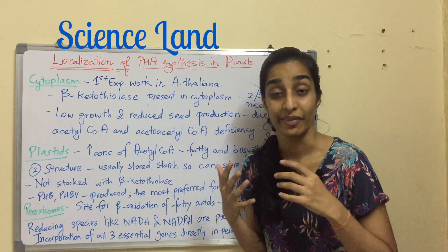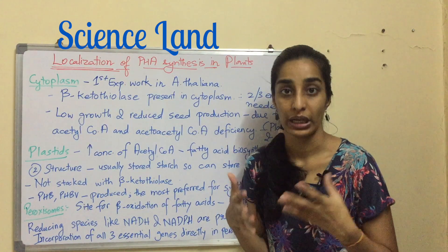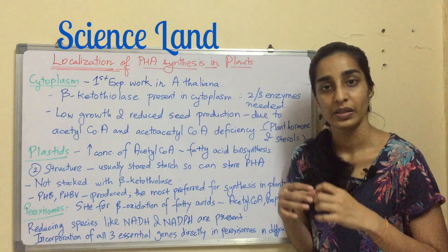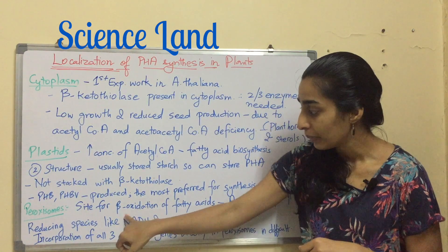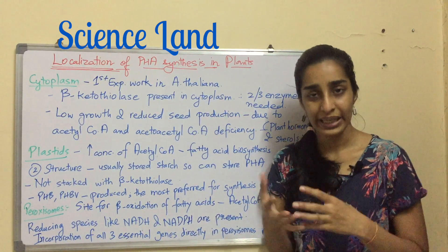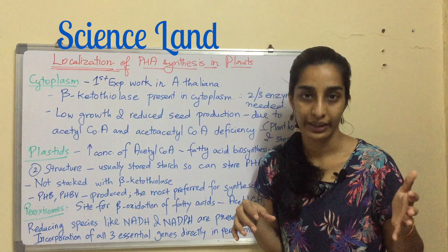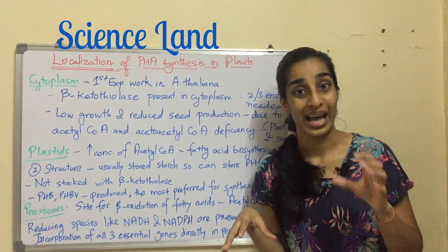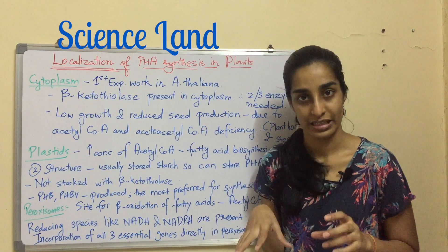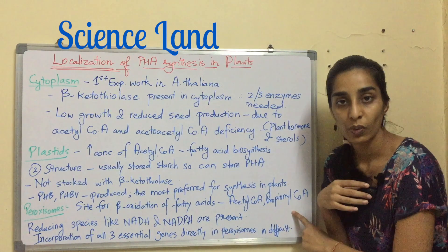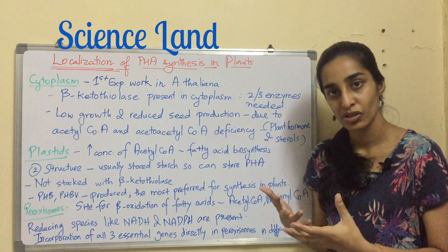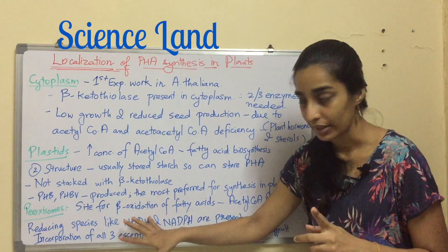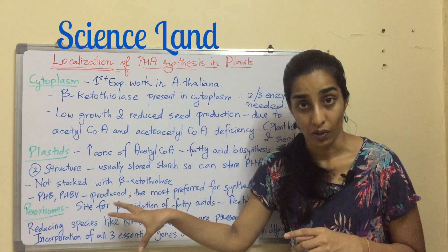The third compartment is peroxisomes, which is a crucial site for beta-oxidation of fatty acids. If it is an even-number fatty acid, it gives rise to acetyl-CoA; if it is an odd-number fatty acid, it gives rise to propionyl-CoA. Both of these are substrates for PHA synthesis, which is one advantage of peroxisomes.